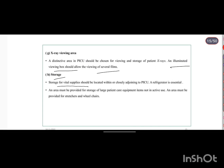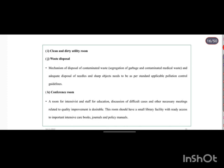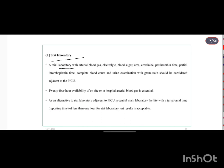Storage areas for vital supplies and care equipment, provisions for stretchers and wheelchairs, and clean and dirty utility rooms are required. Waste disposal provisions should include a mechanism for contaminated waste and sharp objects disposal per Pollution Control Board guidelines. A conference room for staff education and discussion of difficult cases should be available. A stat mini-laboratory adjacent to the PICU should provide 24/7 basic blood analysis including ABG, electrolytes, blood sugar, urea, creatinine, clotting studies, CBC, and urine examination.